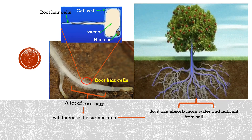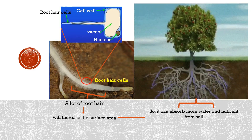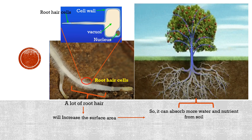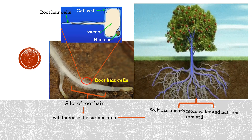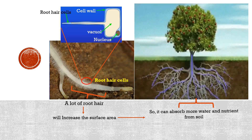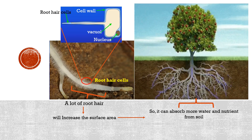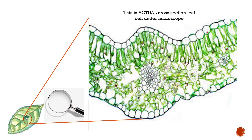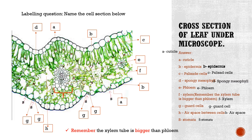Root hair cells contain a cell wall, vacuoles, and a nucleus. Plant roots have a lot of root hairs, which increases the surface area so the plant can absorb more water and nutrients from the soil. Here is an actual cross-section of a leaf under a microscope.